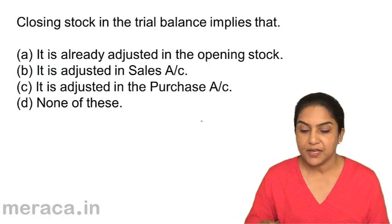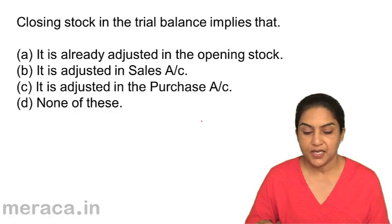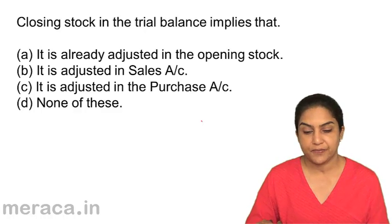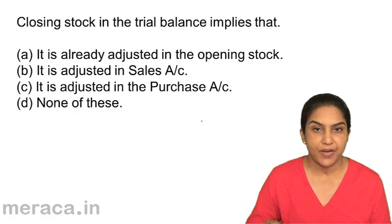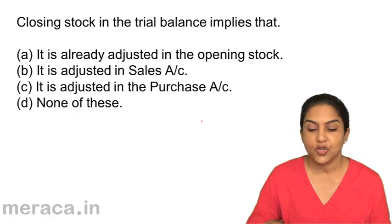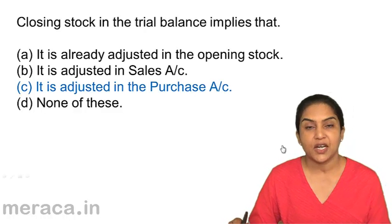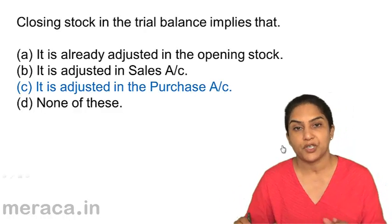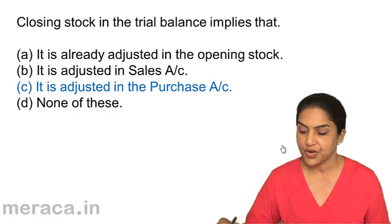Closing stock in the trial balance implies: A, it is already adjusted in the opening stock; B, it is adjusted in the sales account; C, it is adjusted in the purchase account; D, none of these. If we have closing stock in the trial balance, it implies that it has already been adjusted in the purchase account. Correct answer is C — closing stock account debit to purchases. Otherwise, closing stock will appear outside the trial balance and will not be a part of it.